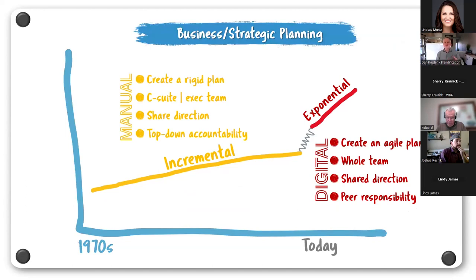Stepping back — business strategic planning as we currently do it in a lot of cases: a very manual process. The leadership team comes together and creates a rigid plan. Sometimes people only do planning once every three years, which blows my mind because the rate of change outside the business is so rapid. The C-suite gets together, creates a rigid strategic plan, shares the direction with other people, and that creates a top-down accountability model.